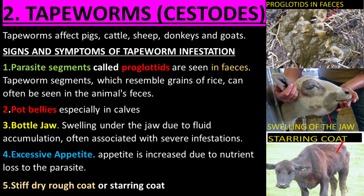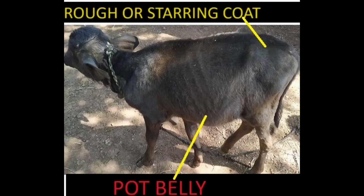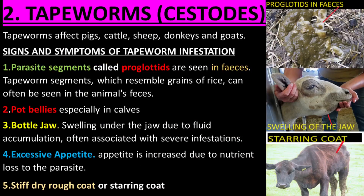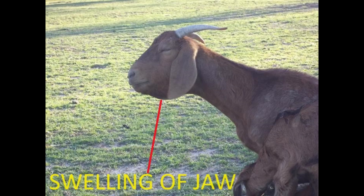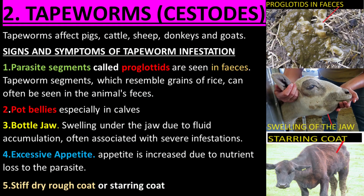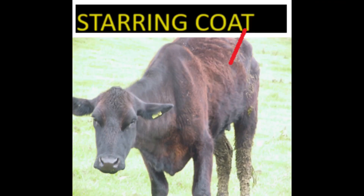Potbellies, especially in calves. Bottle jaw, which is swelling under the jaw due to fluid accumulation, often associated with severe infestations. Excessive appetite — appetite is increased due to nutrient loss to the parasite. Stiff, dry, rough coat or staring coat.